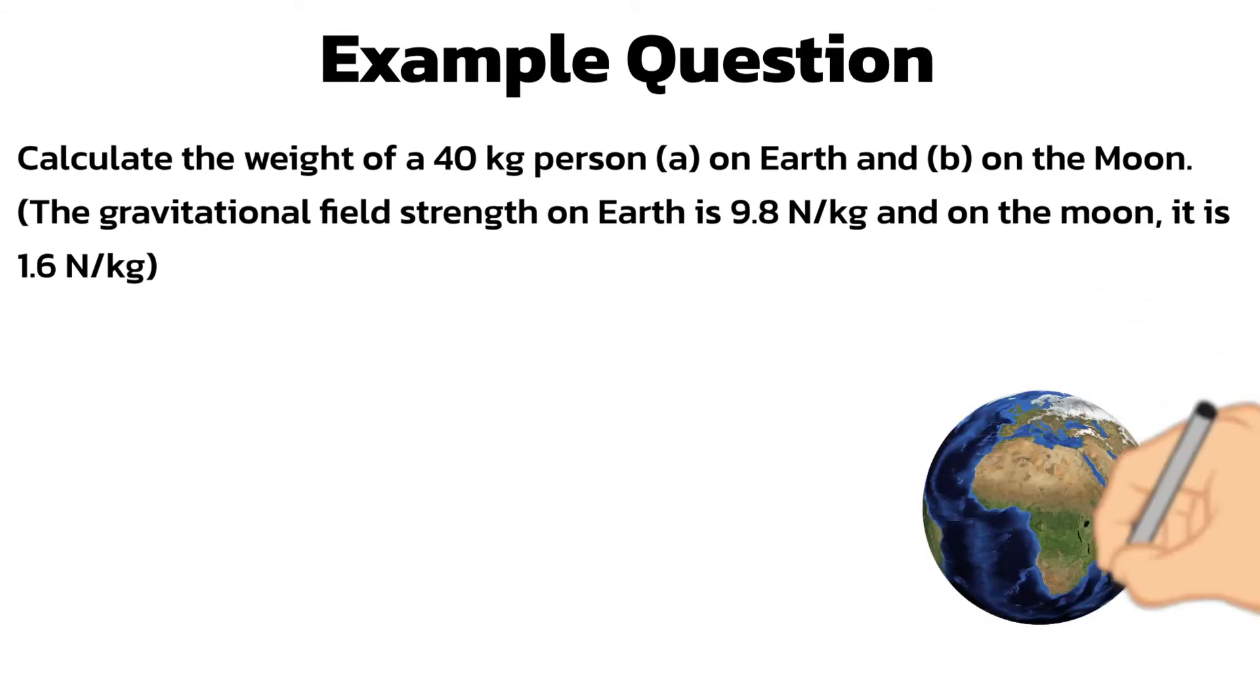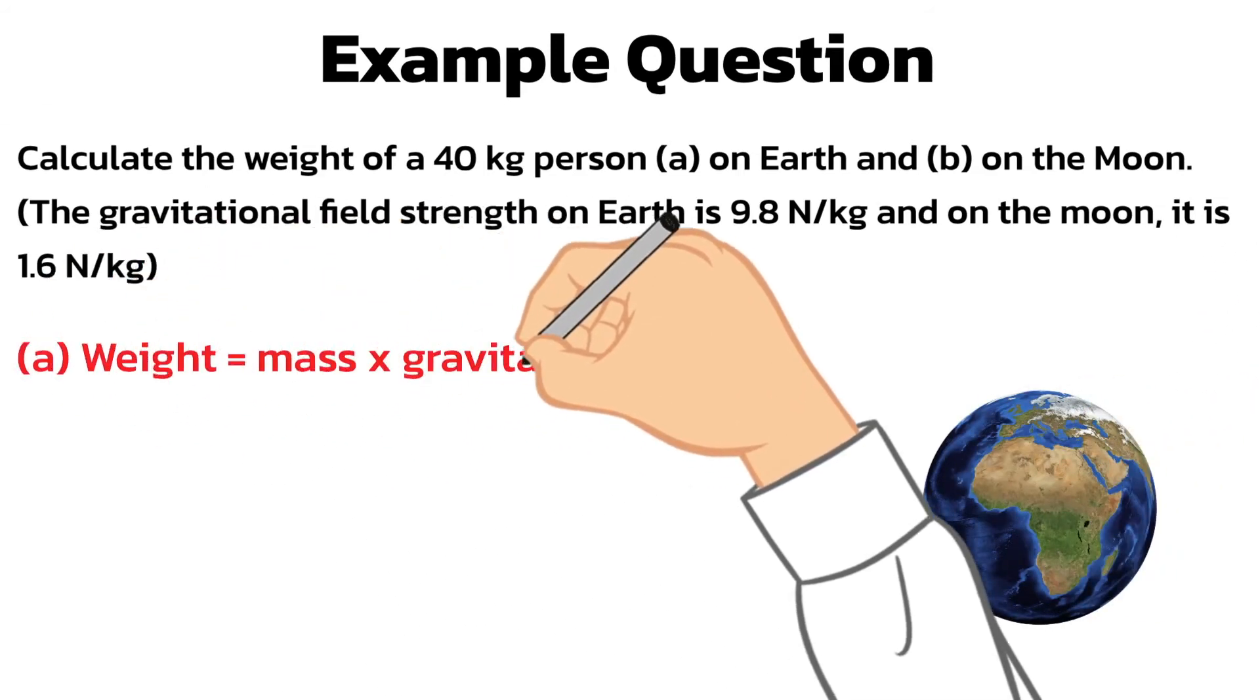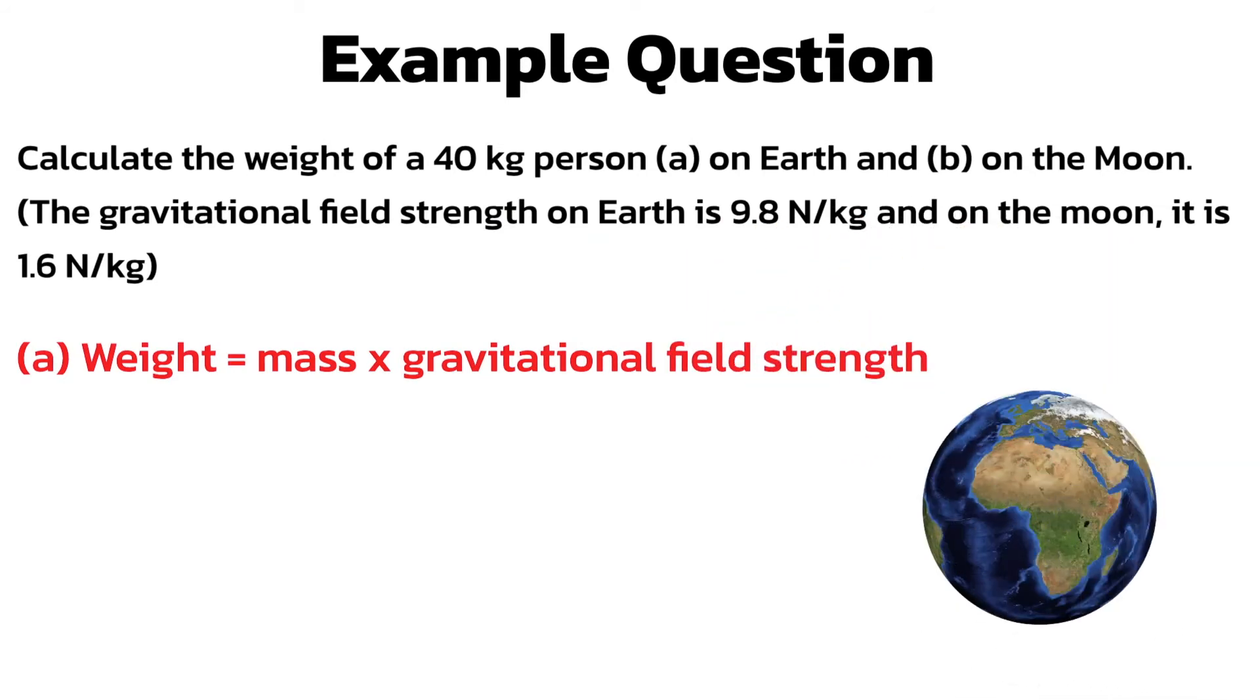Firstly, write the formula weight equals mass times gravitational field strength. Then substitute in the appropriate numbers from the questions. So weight equals 40 kilograms times 9.8 newtons per kilogram. The person's weight on Earth would be 392 newtons.